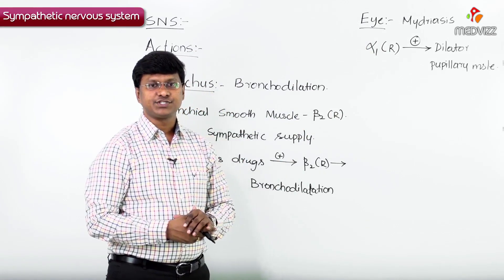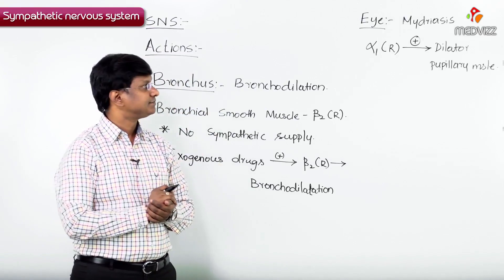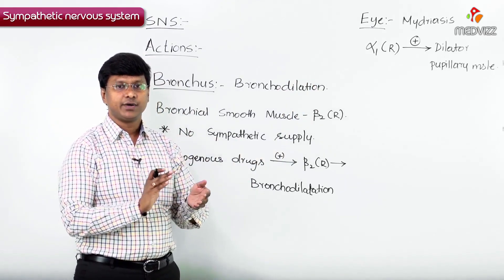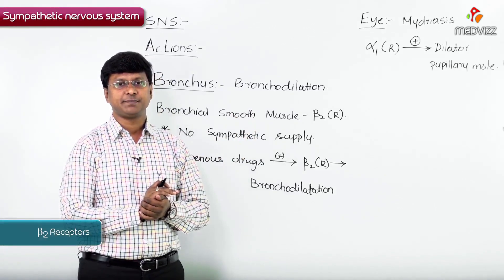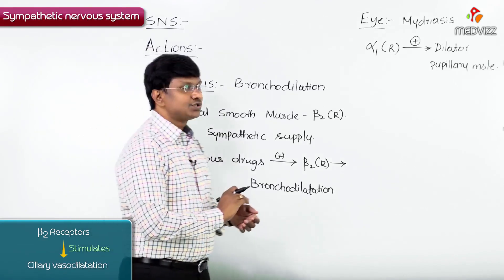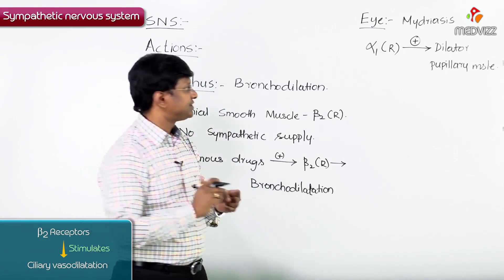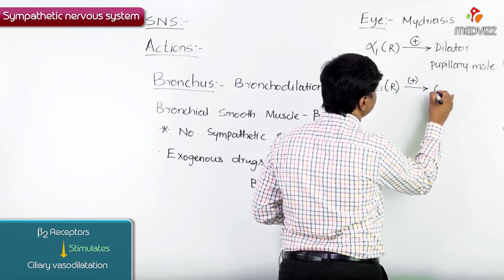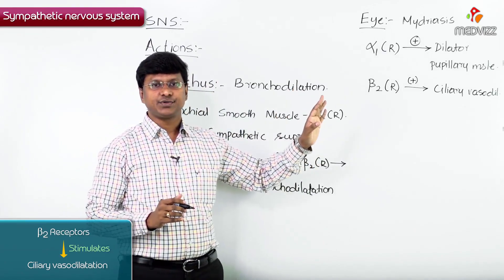The other sympathetic receptors present within the eye are the beta-2 receptors. Alpha-1 receptors on the dilator pupillary muscle cause mydriasis when stimulated. Apart from that, the beta-2 receptors within the eye are present on the ciliary muscles. Whenever beta-2 receptors are stimulated, there will be ciliary vasodilation.